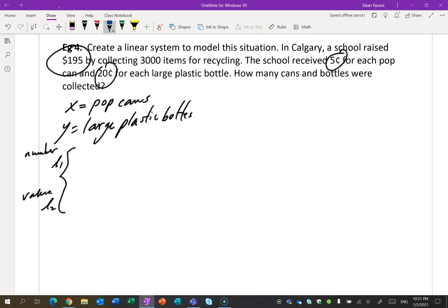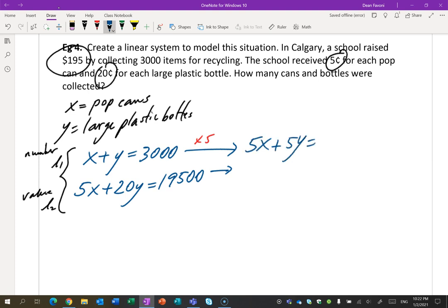Here's what I did. I'm collecting 3,000 items. The number of pop cans plus the number of plastic bottles will give me 3,000. Done. Now the value: 5 cents for each pop can, 5 cents for the pop can, 20 cents for the plastic bottle. Now $195, I have to put this in cents. 195 times 100. Now your choice how you want to solve this. Any way you want. I think it's probably fairly straightforward to do add-subtract here again. I'm going to times that by 5. 5X plus 5Y is 15,000. This one stays. Everything's lined up.